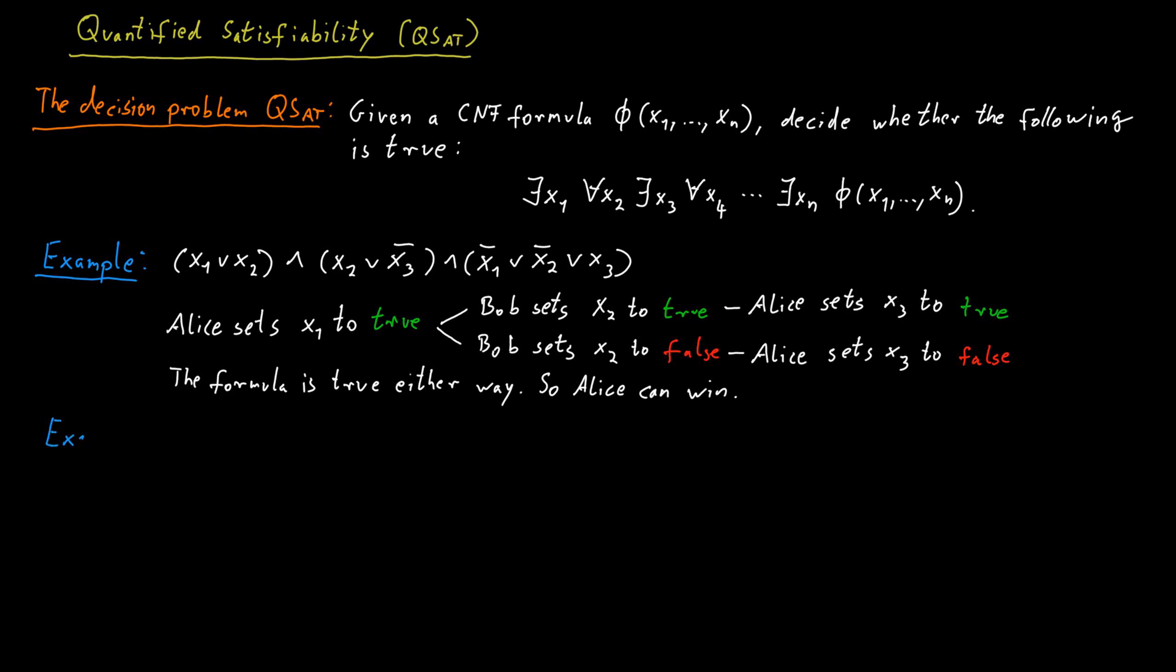An example of a no instance for quantified satisfiability would be (x1 or x2) and (not x2 or not x3) and (not x1 or not x2 or not x3). It's quite difficult to see in general when a formula is a no instance, but here we can try to reason about it a little bit because it's a fairly small formula.